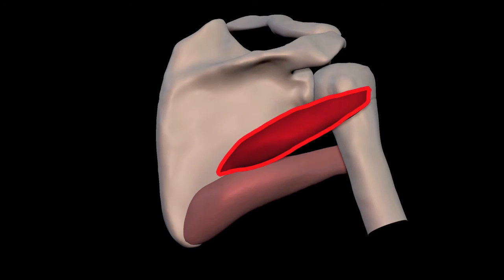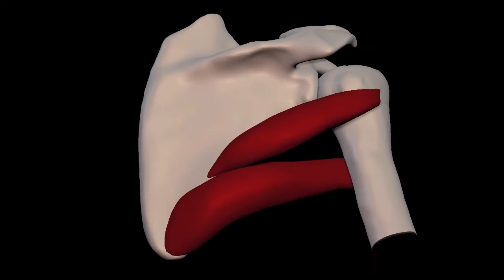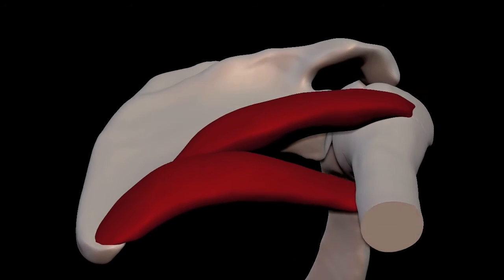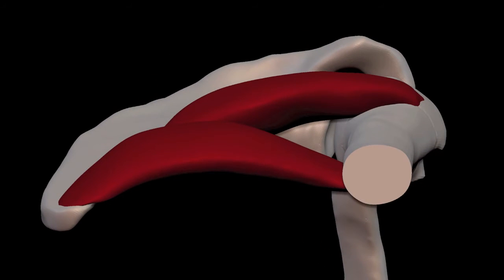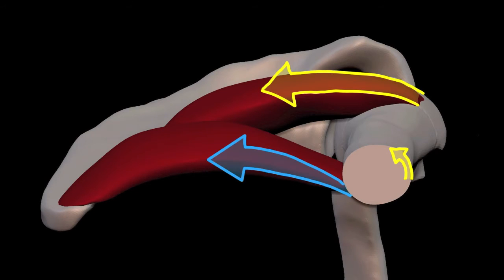And here is the teres minor attaching to the back. Looking at these from the bottom, we can see how the minor rotates the arm outward, and how the major rotates the arm inward.